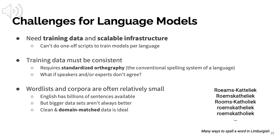This is actually quite common — and even in English, you see non-standard orthography on social media. So you have to wonder whether such a corpus is appropriate for training a next-word prediction model. Some languages, like Limburgish spoken in the Netherlands, have many different ways to spell the same word. A somewhat more straightforward problem is that word lists and corpora are usually relatively small for most languages — English has billions of sentences available, but that won't be the case for most languages. That said, you don't necessarily need a bigger dataset; you just need clean, domain-matched data on the same topic with similar formality and style.